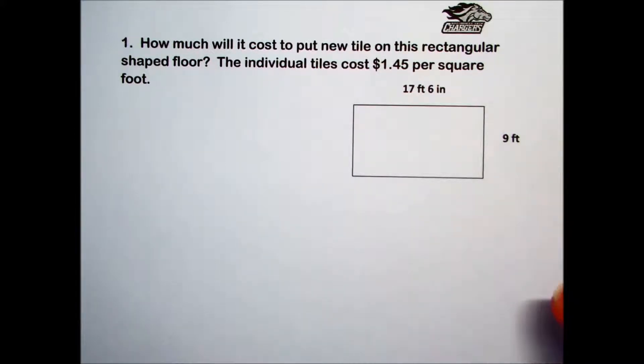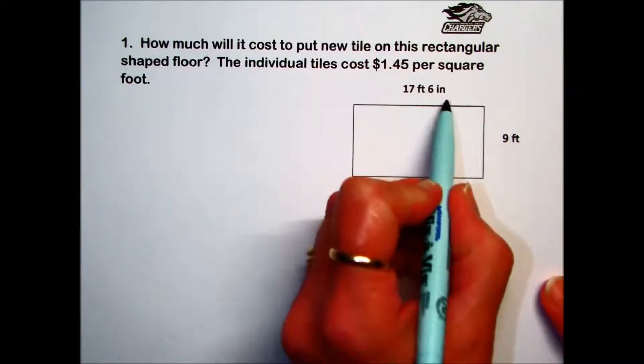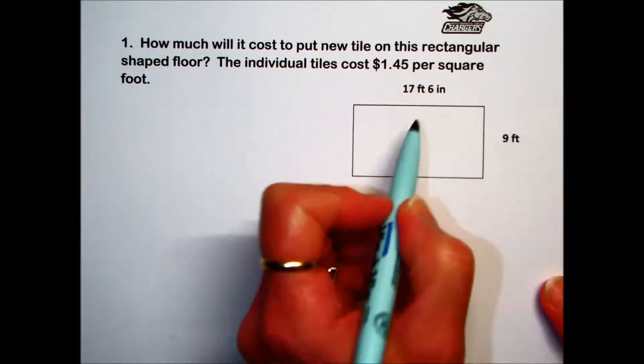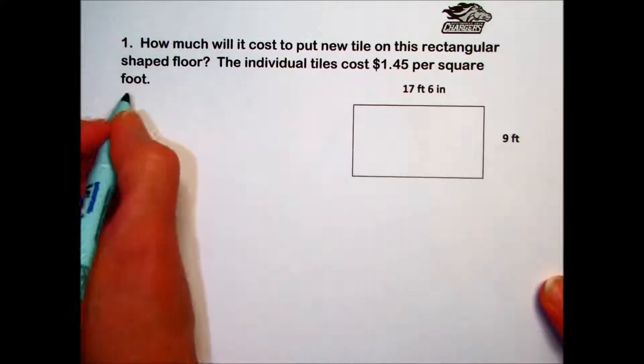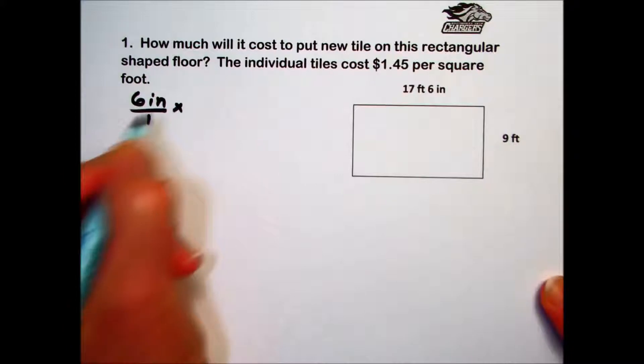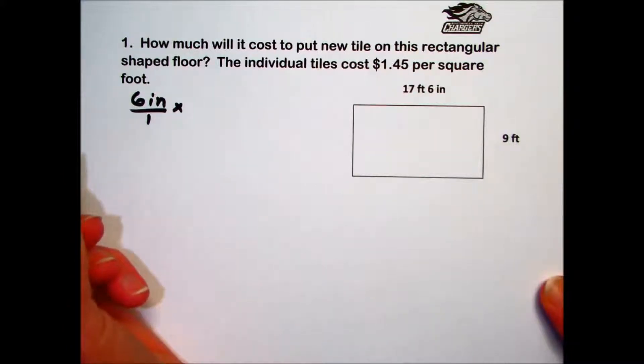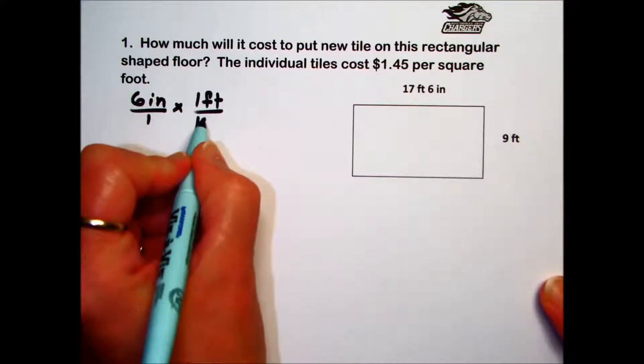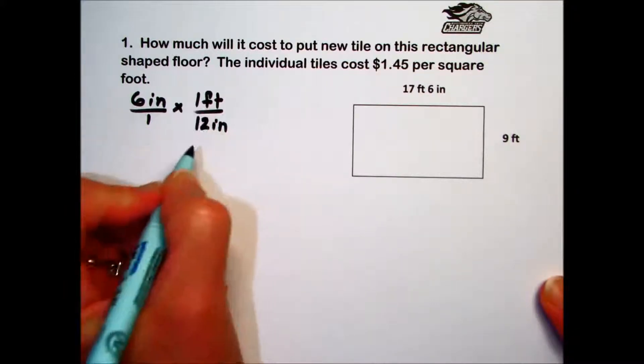Because the tile cost is expressed per square foot, we need to convert this mixed unit length measurement given for our floor. So we need to convert that 6 inches into an equivalent foot measurement. We'll do that by using the fact that one foot is equivalent to 12 inches. We'll use that as our conversion factor.